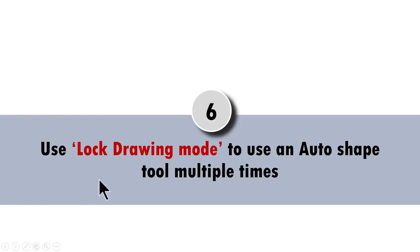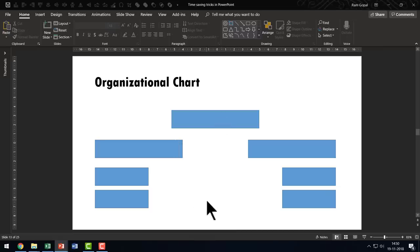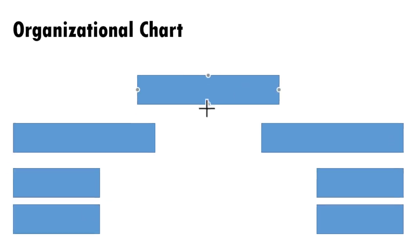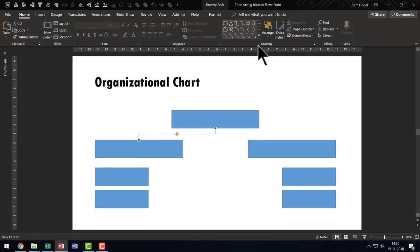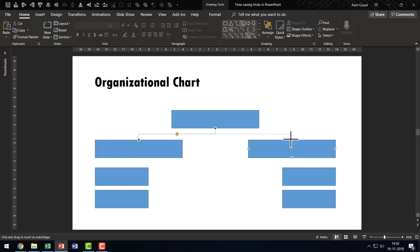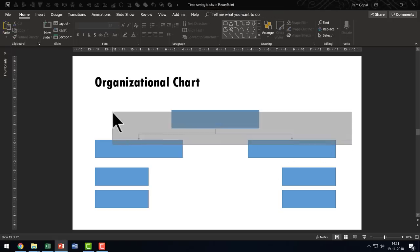The sixth time-saving trick is to use lock drawing mode to use an auto shape multiple times. Let's say I have shapes representing an organizational chart and I need to connect them using an elbow connector. Normally you'd go to the auto shapes gallery, find the right tool, use it once, and then have to go back again and again — which can be quite a painful process. Let me show you how to save time by locking that particular auto shape.